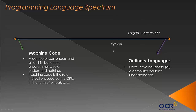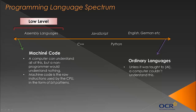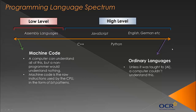Then you have programming languages such as Python, which consist mainly of words with some numbers. Further along you have JavaScript, then C++, and then assembly languages which are basically machine code. Machine code and assembly languages are regarded as low-level programming languages, while the rest are high-level. High-level languages are closer to natural language — non-programmers could in theory understand them — whereas low-level languages only specialists could understand.